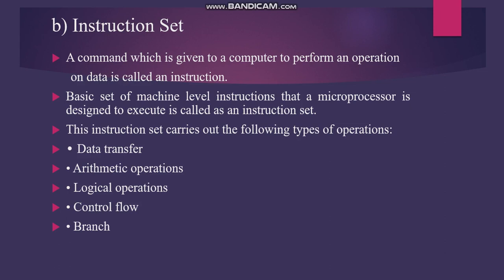A one-byte instruction is 8 bits. For example, the instruction MOV A, B — where A and B are 8-bit registers — is a one-byte instruction and uses one memory location. A two-byte instruction such as MVI uses 16 bits: one 8-bit opcode and one 8-bit data operand.